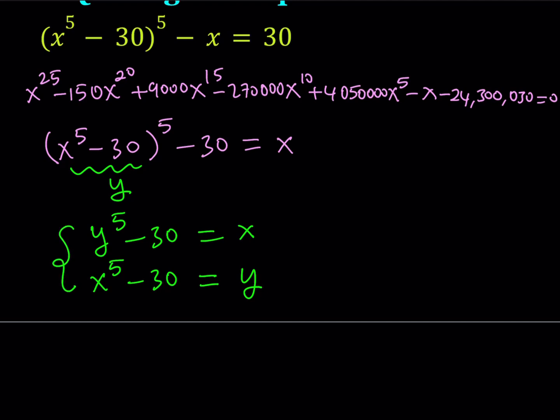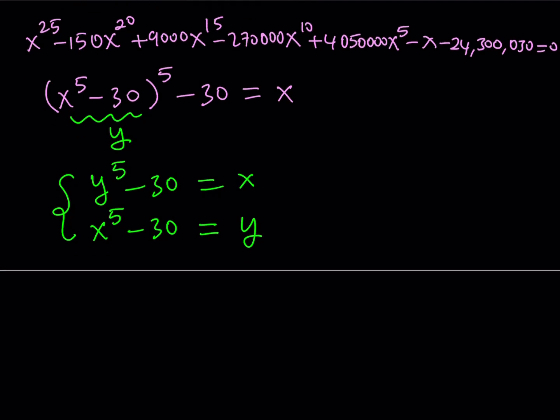So from here, in other words, I'm getting a system of equations. I started off with a single variable quinvigentic. Now I turned it into a system. Why? Because solving the system is easier than solving the quinvigentic. Trust me on that. Now, how do you solve this? Well, we have some kind of symmetry here.